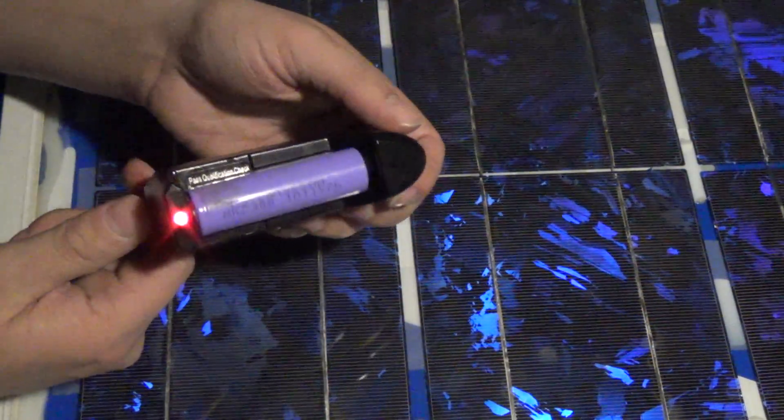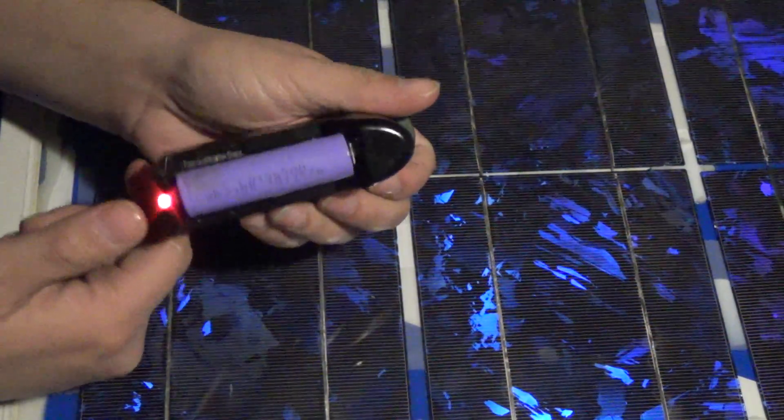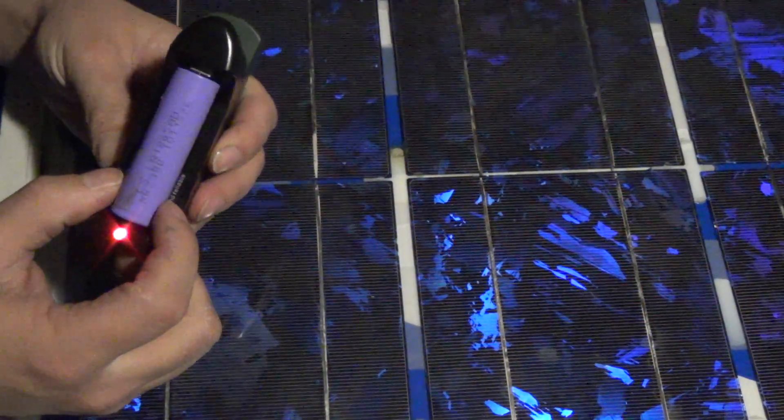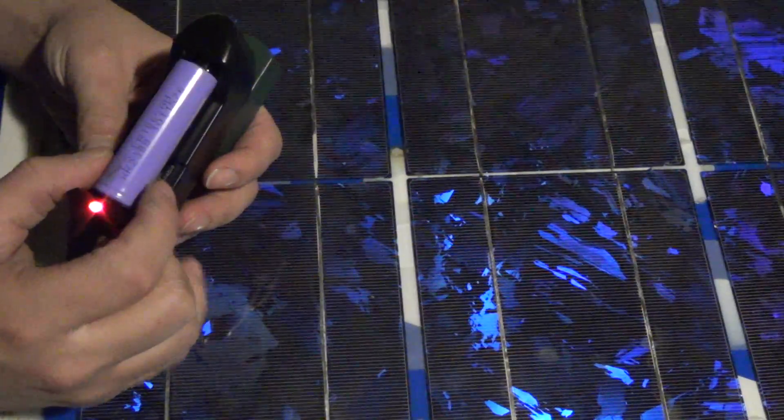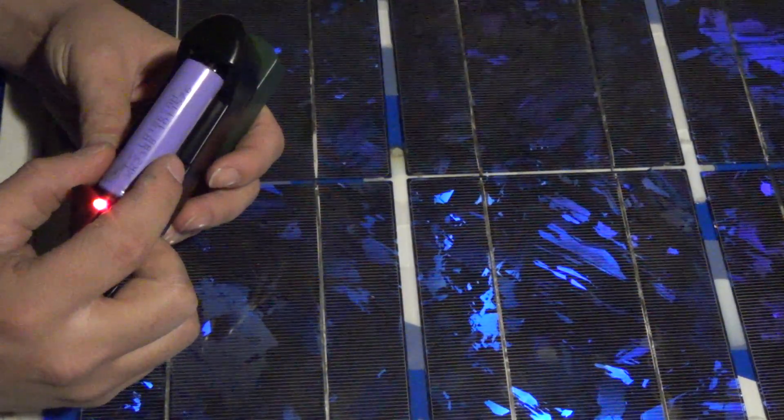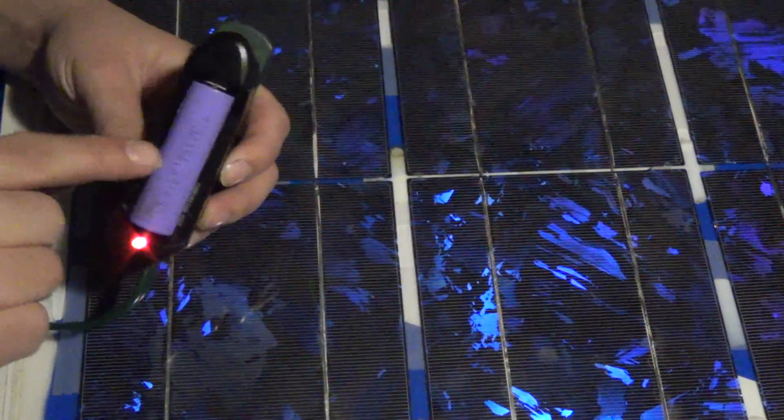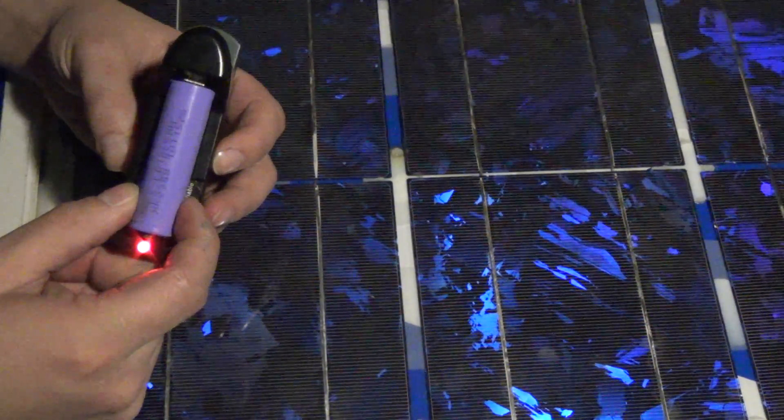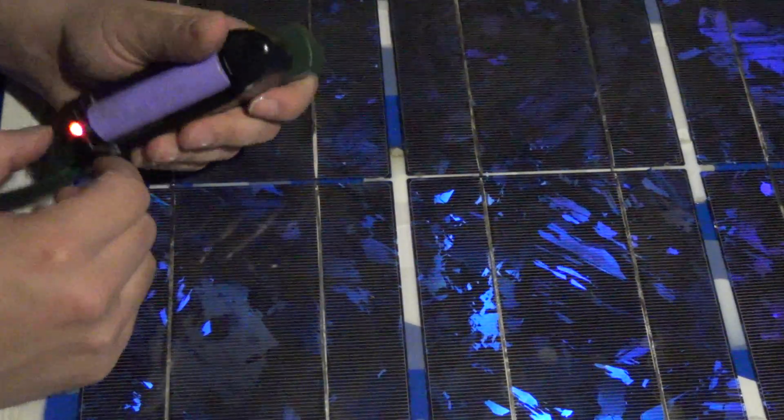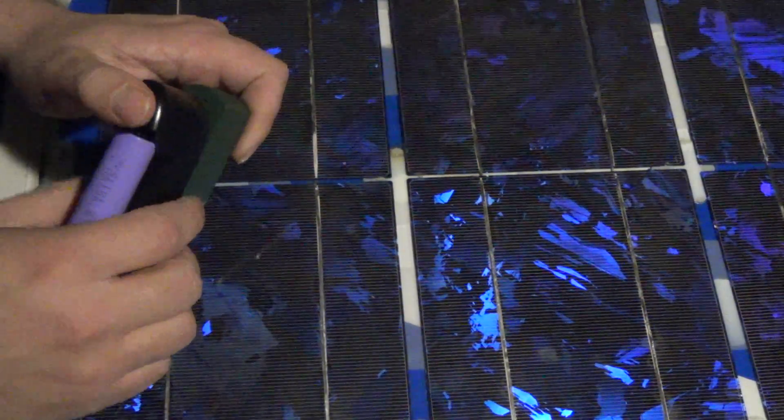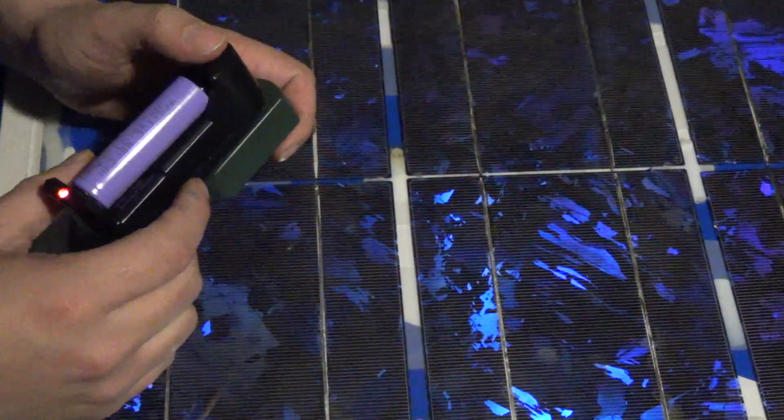I currently have a Tesla Model S car, and the Tesla Model S has—let's see, I have the 60 kilowatt battery pack, so I have roughly 7,000 of these cells to power my car. Ain't that awesome? And the 85 kilowatt pack has roughly 8,000 to 8,500 of these same size form factor cells.